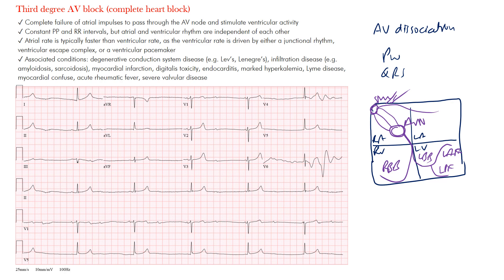All AV blocks occur within the AV junctional region, where there is blockage of conduction from the atria to the ventricles. With complete heart block, you can have a total block higher up where nothing gets through, so the impulse from the sinus node meets a halt. Or the block may be lower down, where the impulse gets through the AV node but then hits a stop sign and won't go further. As a result, the P waves from the atria and the QRS complexes in the ventricles become separated.